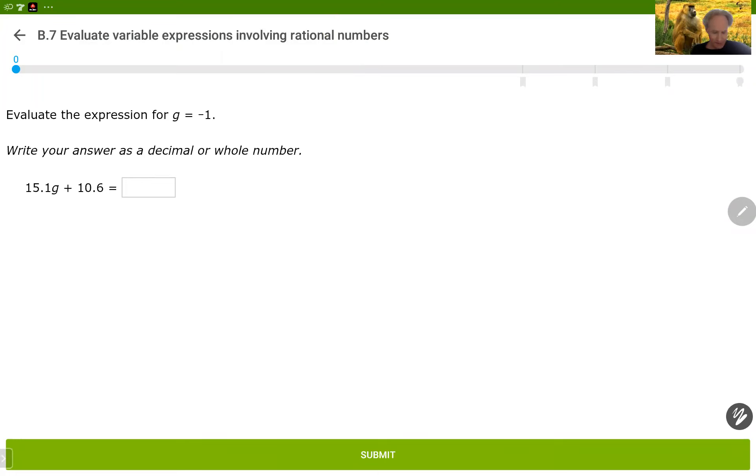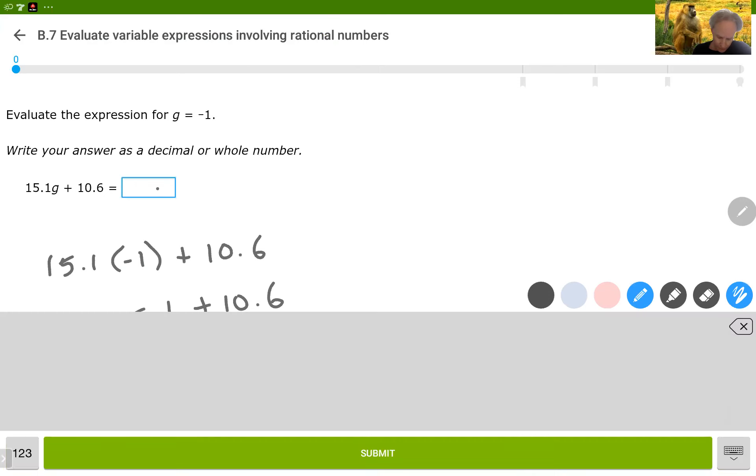Okay, we're going to evaluate the expression for g equals negative 1. So we're looking at 15.1 times negative 1 plus 10.6. Of course we have to multiply before we add. So we've got negative 15.1 plus 10.6 and we're looking at the difference here which is 4.5 and the winner is negative. Negatives are larger. So we're talking about negative 4.5.